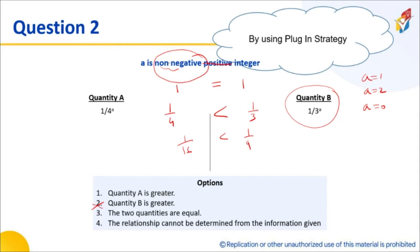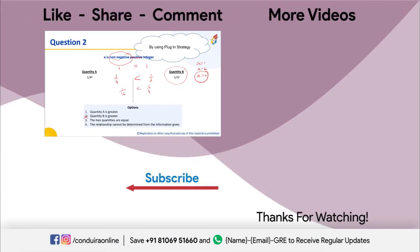So can I now say that quantity B is greater? No, you cannot. You need to look at this word non-negative and say they gave non-negative, which means that they are now hinting that there is a possibility of 0. Let me check out with that hint. If you just plug in that value 0 carefully, you could then realize that the relationship cannot be determined. What is the most important thing that they help you with? They use the word non-negative.